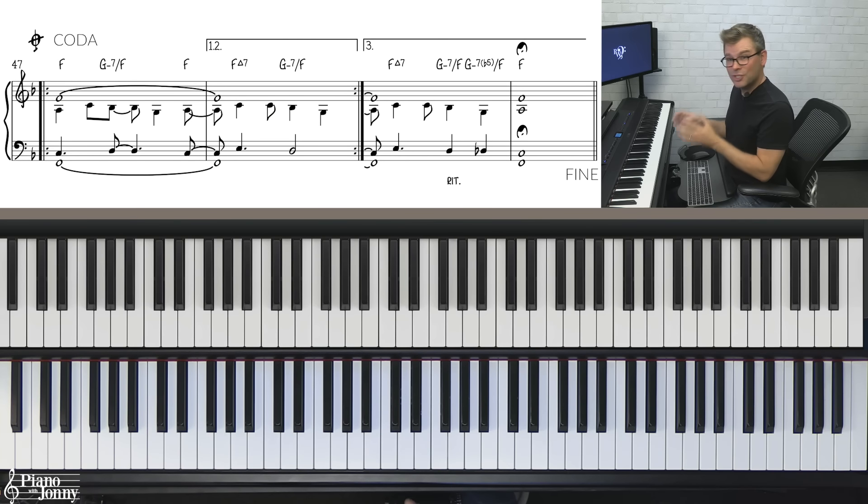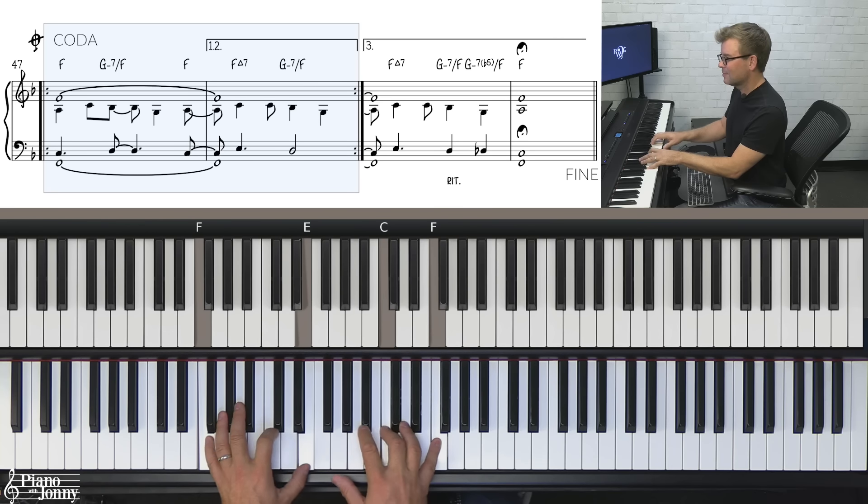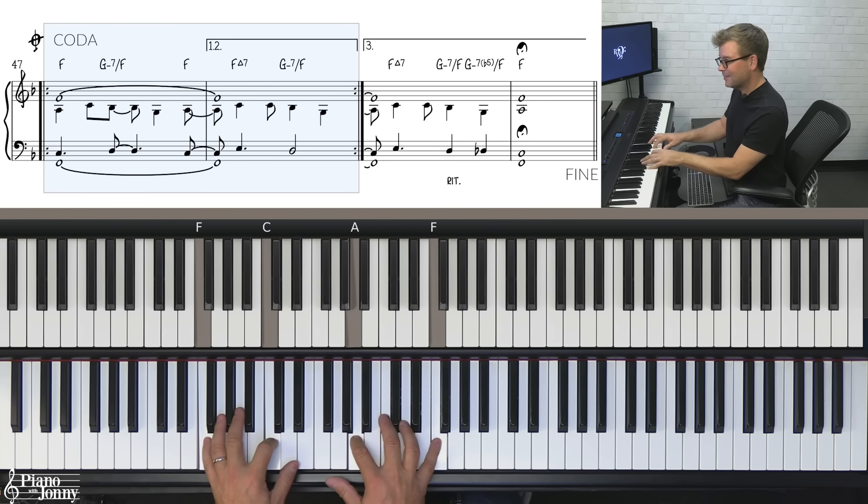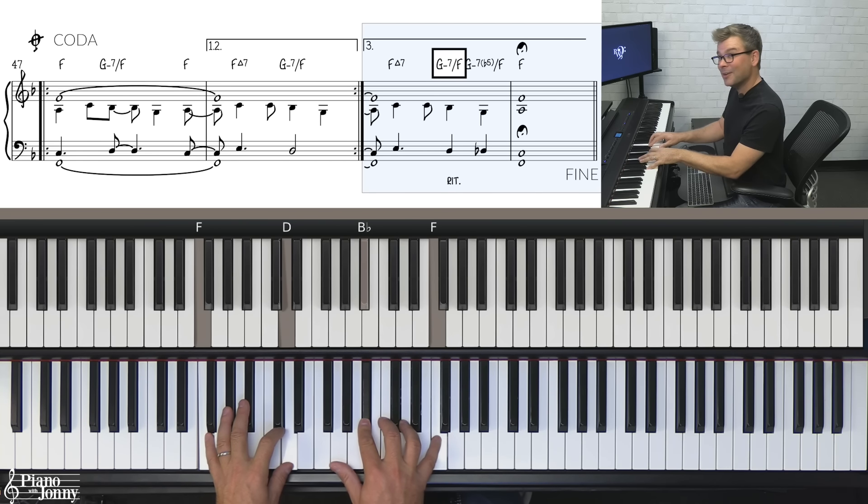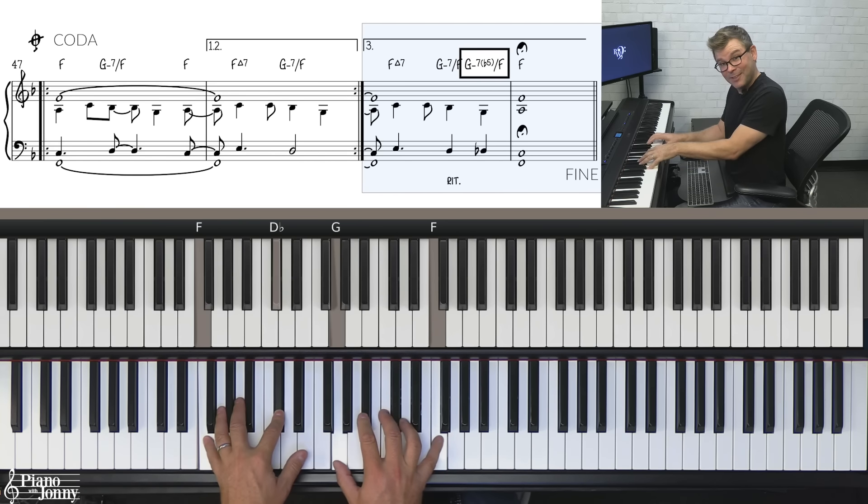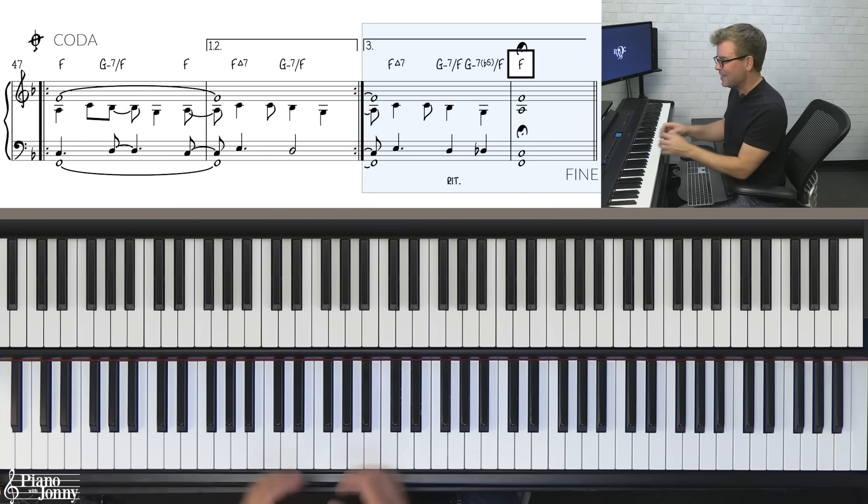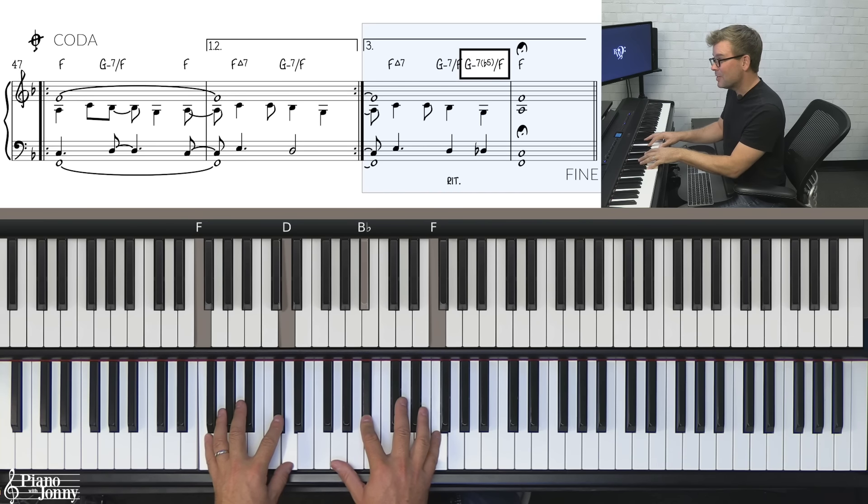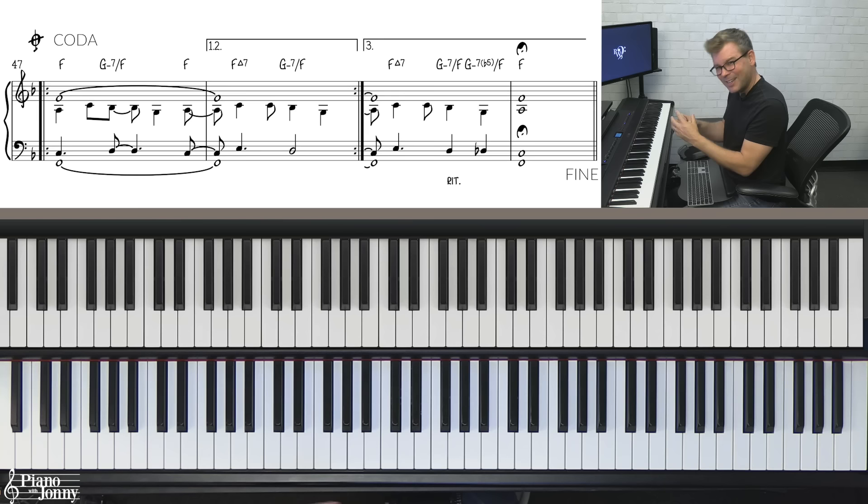So the coda, or ending, begins just like the introduction with a slightly different ending. So it sounds like this. Repeat. Repeat again. But then this time we go to the third ending, to G minor seven over F, then check this out. G minor seven flat five, and then we end on the F chord. Isn't that beautiful? It gives a certain sadness to the ending with that G minor seven over F, G minor seven flat five, and then finally ending on the F chord. And you can really milk that ending with a little bit of a retardando, and just enjoy that ending.